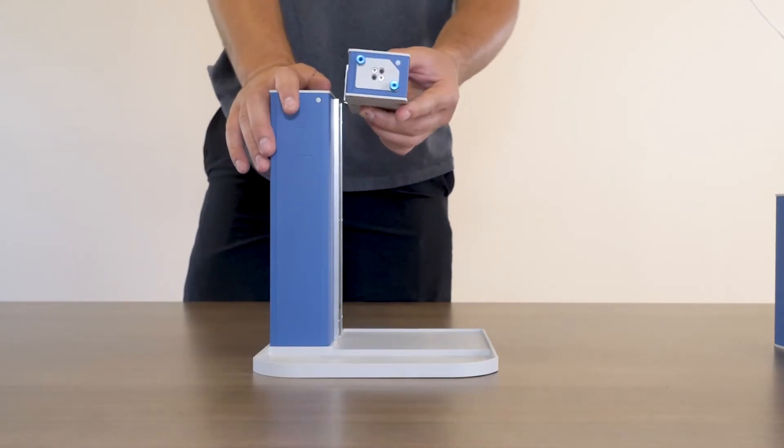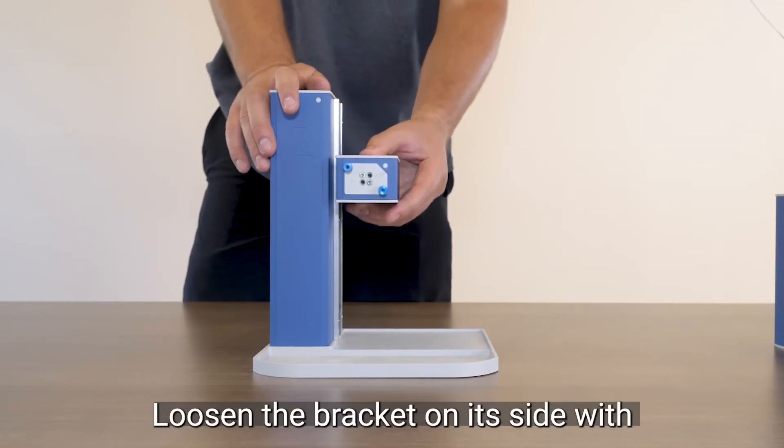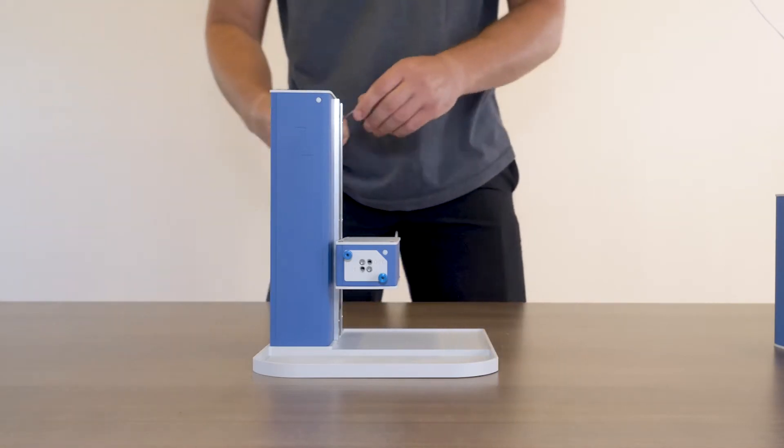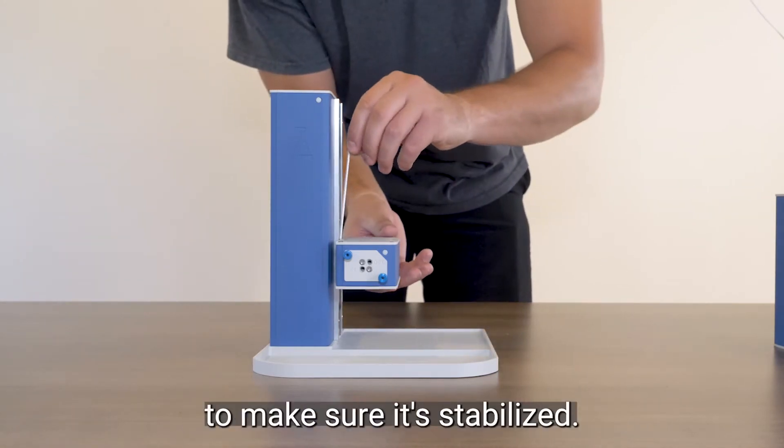Starting with the detector, loosen the bracket on its side with the provided Allen wrench and simply slide it down to near the bottom of the power tower. Now tighten it with the wrench to make sure it's stabilized.